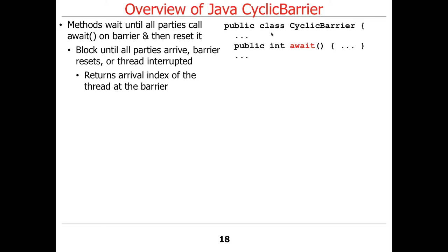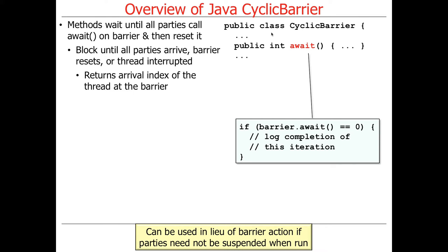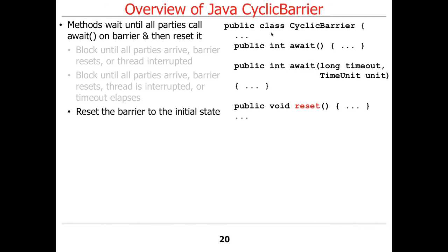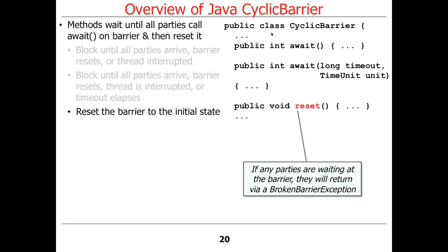Await returns the arrival index of the thread at the barrier. You can check when the count is zero — that means it's the last one — and you could do something at that point if you want to, if you don't care that the threads are not going to be suspended. Then reset sets the barrier back to its initial state. If threads are waiting in an await and reset is called, that causes all of those waiting threads to receive a BrokenBarrierException. That's a fail-fast technique — once you reset, you tell anybody still waiting that the barrier's been broken, and they can decide whether to go back and wait or do something else.